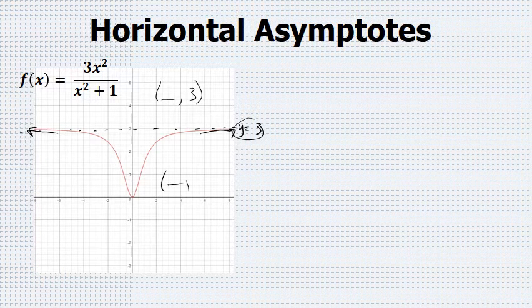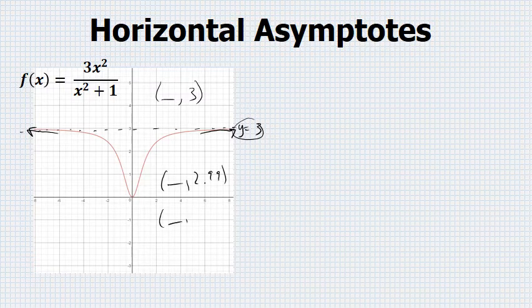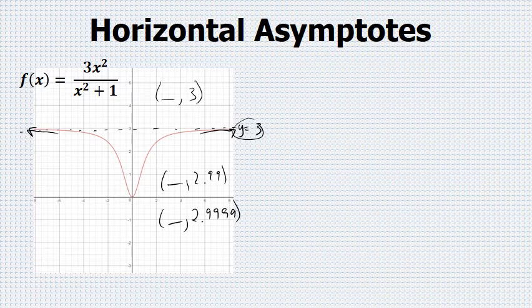There are x values that would have a y coordinate of 2.99, and x coordinates that would have a y value of 2.9999, but none that will ever reach 3.